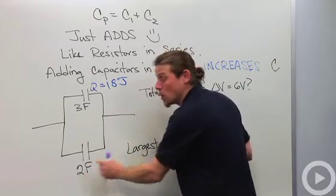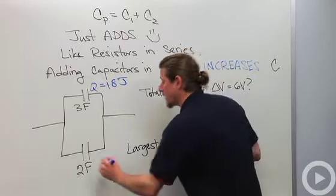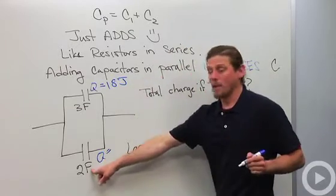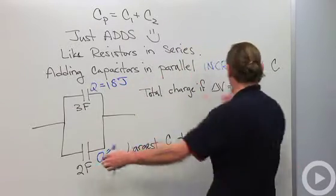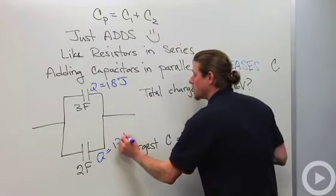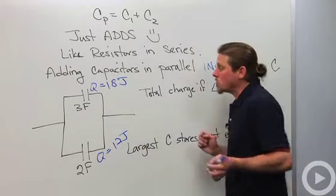All right, and the charge held on the 2 farad capacitor is going to be, again, capacitance times potential difference, 2 times 6, 12 coulombs.